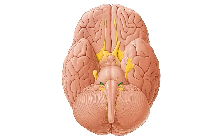Briefly flipping the brain to its inferior aspect, this image shows the inferior view of the brain and brainstem with all 12 paired cranial nerves projecting from the central nervous system.